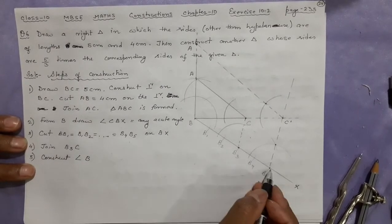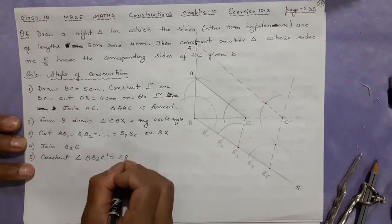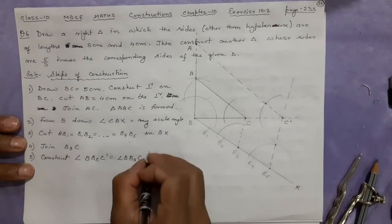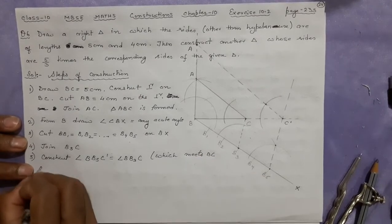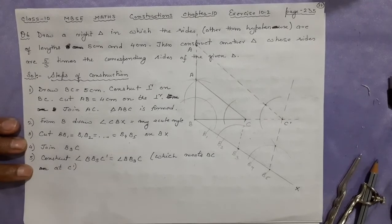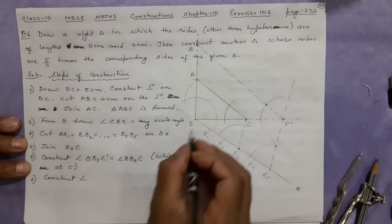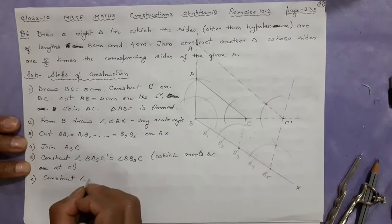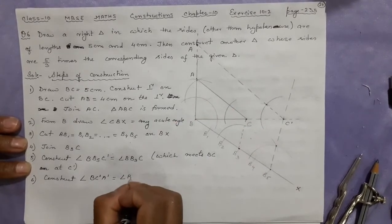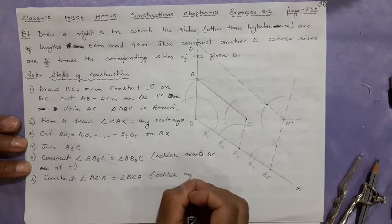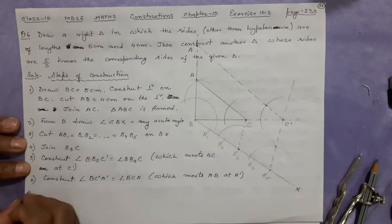Next step: construct angle BB5C dash equal to angle BB3C, which meets BC extended at C dash. Similarly, construct angle BC dash A dash equal to angle BCA, which meets AB at A dash.